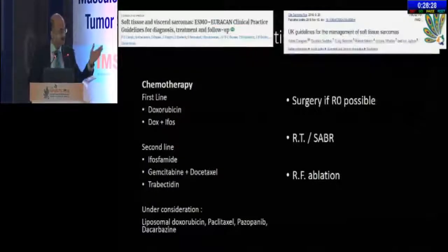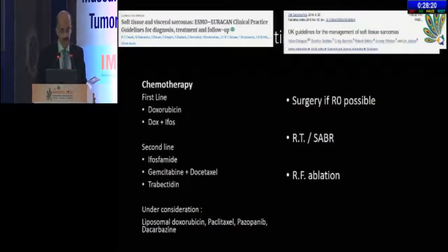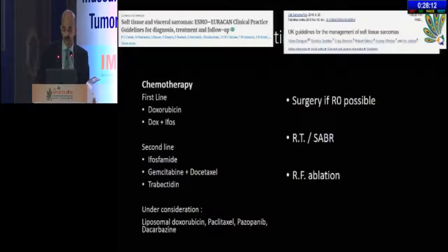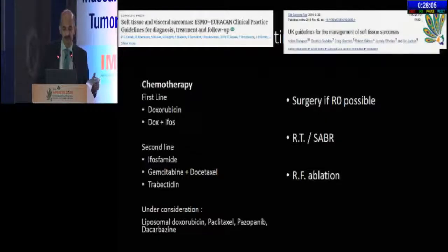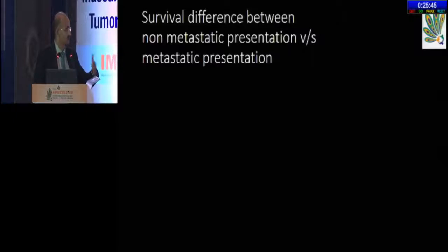The panel is united: this patient would go for chemotherapy first and then local management depending on response. Doxorubicin and ifosfamide are the preferred first-line drugs. The UK guidelines say surgery if R0 is possible; otherwise, similar methodology. If unresectable, stereotactic ablative radiotherapy or RF ablation as palliative modalities. This case highlights the survival difference between non-metastatic versus metastatic presentation — roughly 68% versus 17% five-year survival, with median survival around 17 months in the metastatic group.